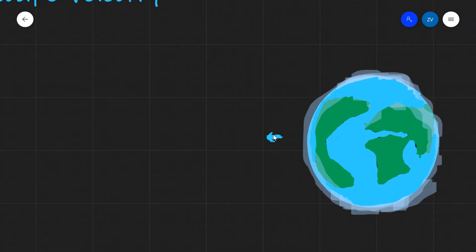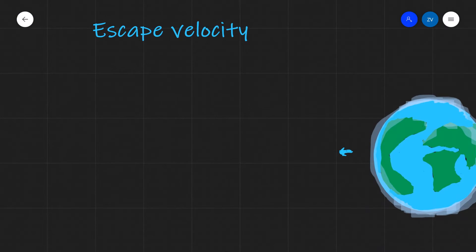The condition for this to happen is that the kinetic energy of the rocket will be converted to gravitational potential energy as it's moving away.